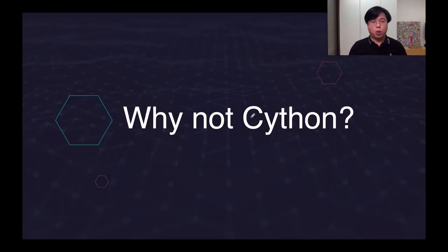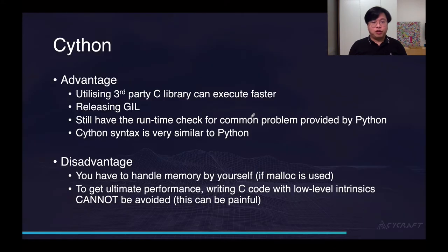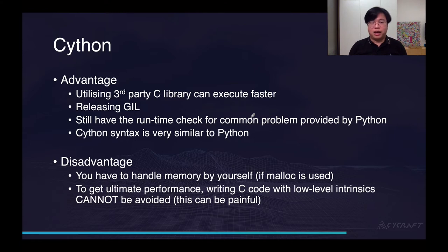Let's move on. Why not Cython? If you ever have a NumPy code performance issue and ask your friends, colleagues, or teachers how to improve it, most likely the answer you will get is: why don't you try Cython? In this slide I will give some pros and cons regarding it. First, let's take a look at the advantages. If you are using Cython, you can utilize a lot of third-party C libraries, and normally C code runs much, much faster than Python code.